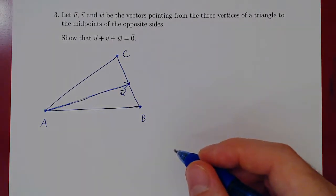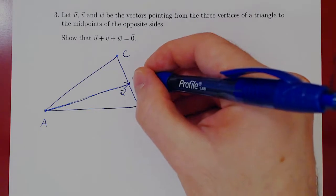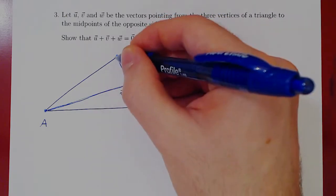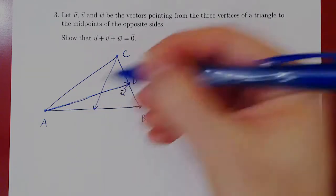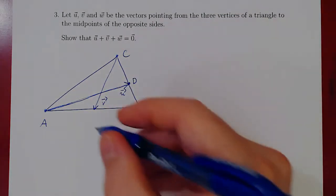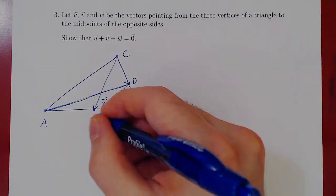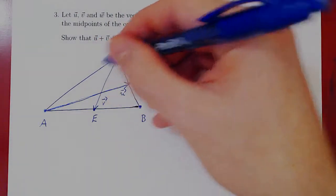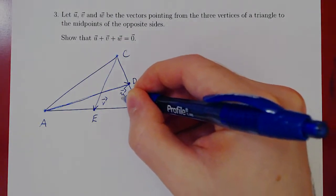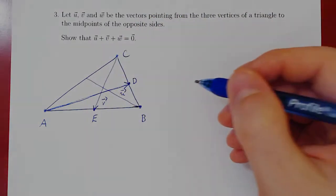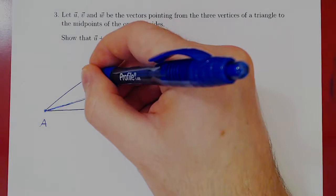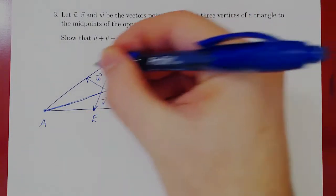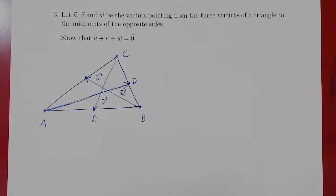We have a vertex of interest — let's call it D. Then we have the vector pointing from vertex C to the midpoint of AB. Say this vector is V. We have another vertex of interest; let's call this vertex E. Finally, we have the vector pointing from B to the midpoint of the opposite side AC. Let's call this vector W, and this vertex of interest F.